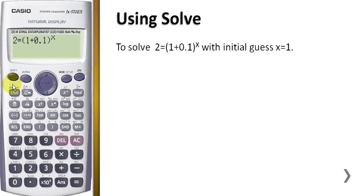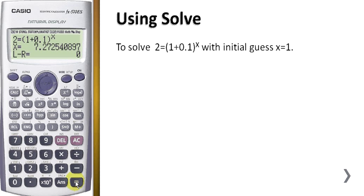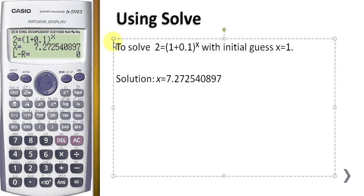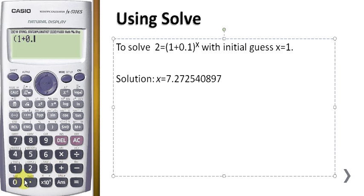you need to press SHIFT SOLVE, and then it will ask you what is the initial guess for X. Press 1 and then equal, and the calculator will return to you that the value of X is 7.252725. You can check your answer: 1 plus 0.1 to the power of